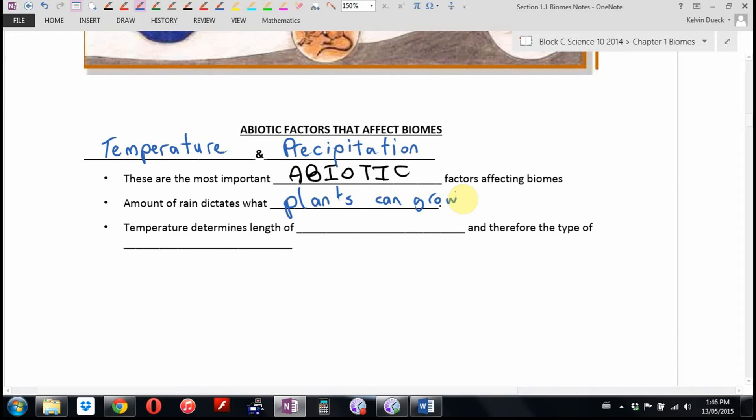And temperature determines the length of the growing season. And therefore the type of plants. Wait a minute, Mr. Dueck. Shouldn't like height be on here? Because don't different things grow at different altitudes? It's not the height. It's the temperature on the mountain. The higher you go, the colder it gets. That's what affects what grows there. The two big ones, temperature and precipitation. Everything else can, most everything else, can be explained in terms of those two.